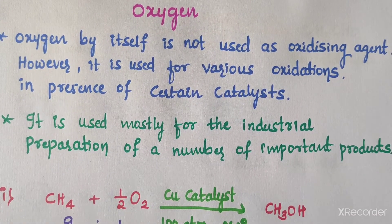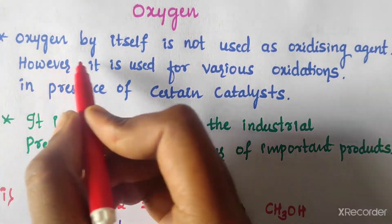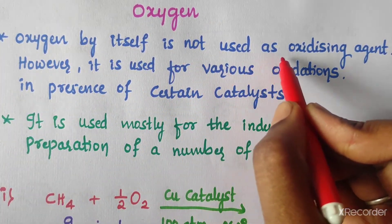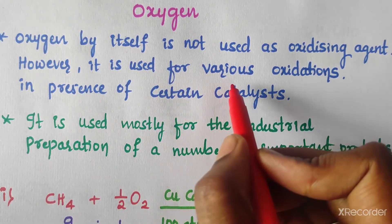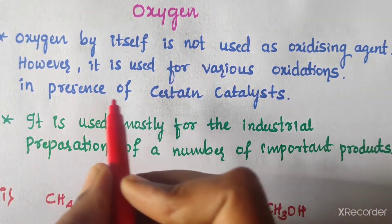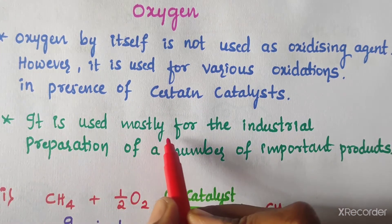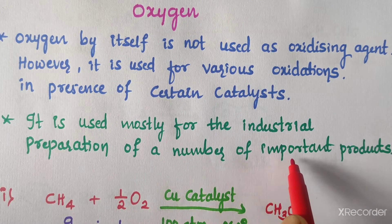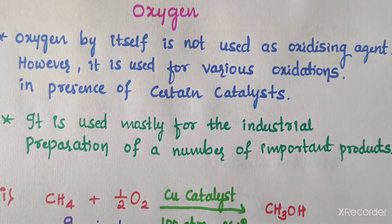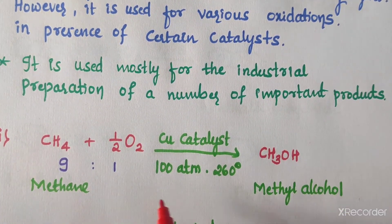Hello students, welcome to this new video on the oxidizing agent oxygen. Oxygen by itself is not used as an oxidizing agent; however, it is used for various oxidations in the presence of certain catalysts. It is used mostly for the industrial preparation of a number of important products.